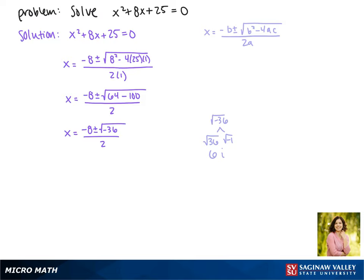So replacing the square root of negative 36 with 6i gives us negative 8 plus or minus 6i divided by 2. These can be broken up into their own fractions of negative 8 over 2 plus or minus 6i over 2. This gives us x equals negative 4 plus or minus 3i. So these are the complex solutions to our equation.